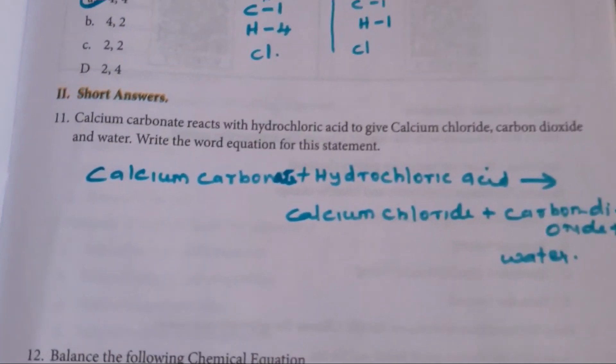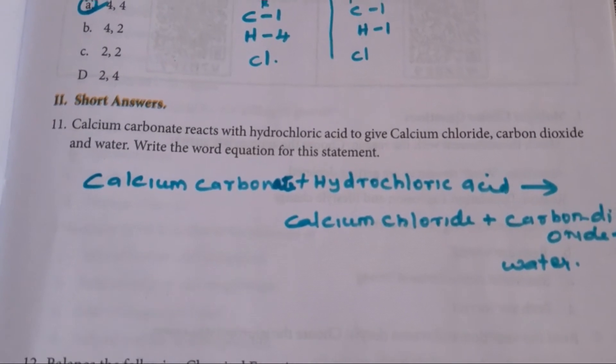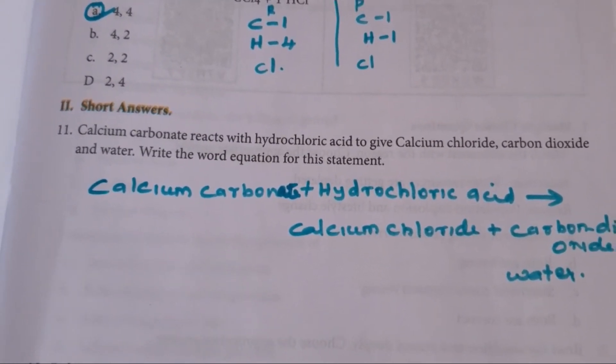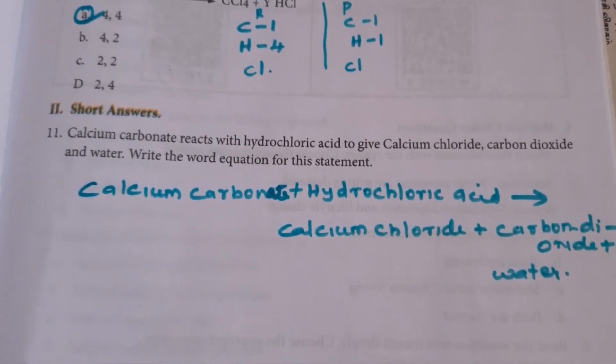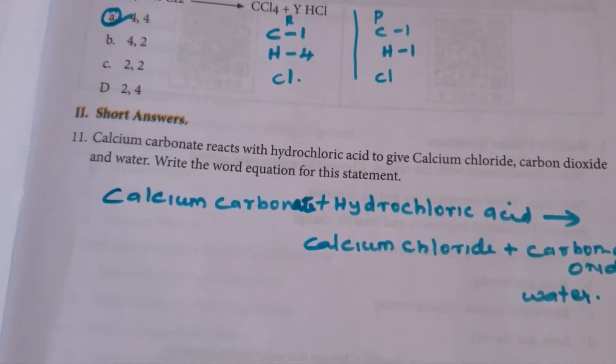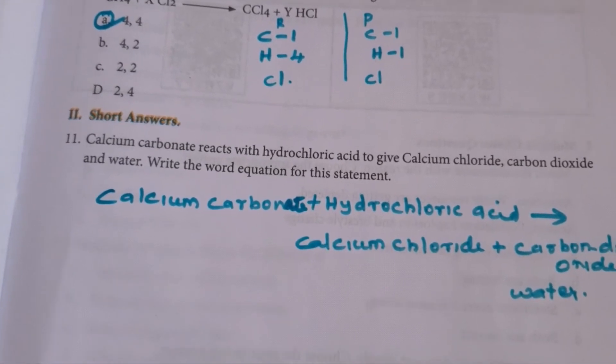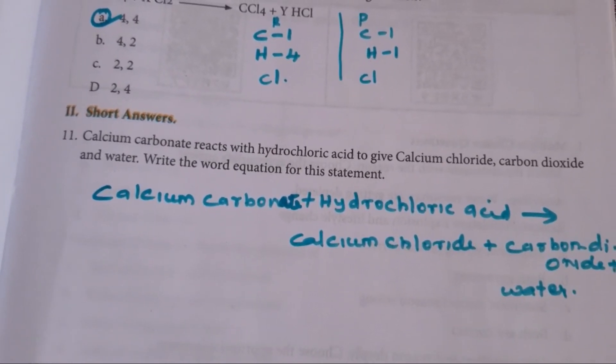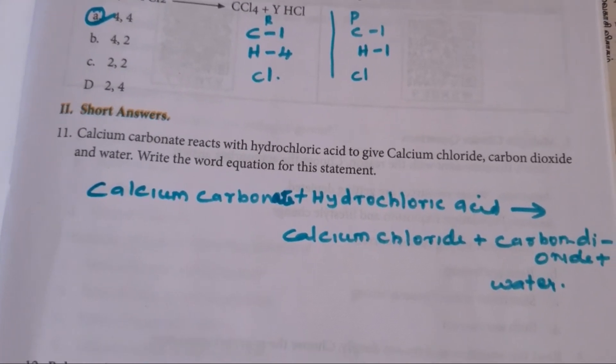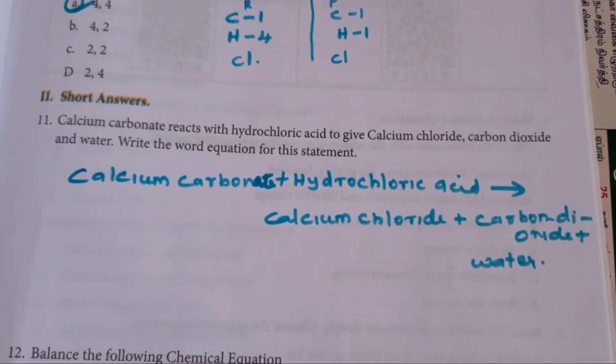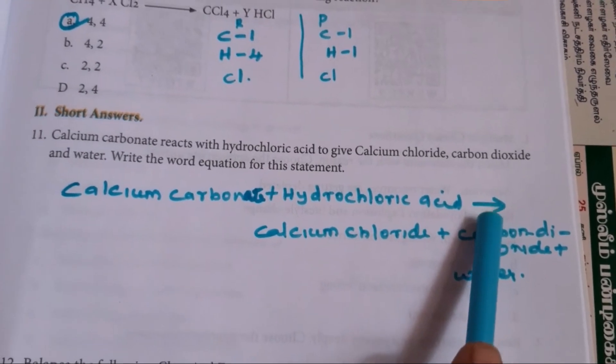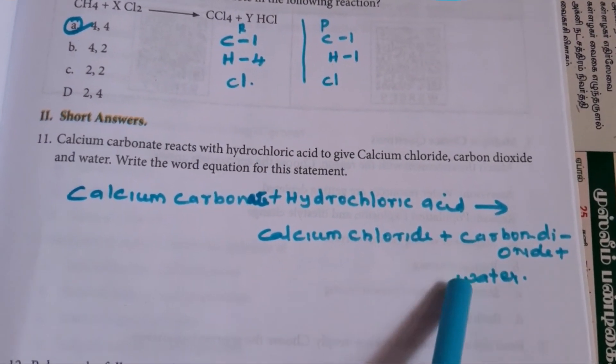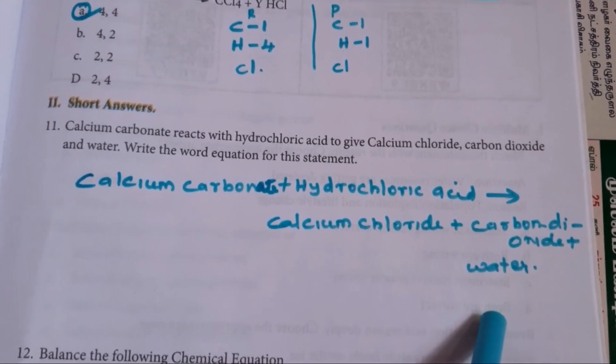Then next one. Calcium short answers. 11th one. Calcium carbonate reacts with hydrochloric acid to give calcium chloride, carbon dioxide and water. Write the word equation for this statement. They are just asking the word statement. So you just write calcium carbonate plus hydrochloric acid to give, we are putting this arrow, gives calcium chloride plus carbon dioxide plus water.